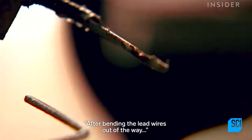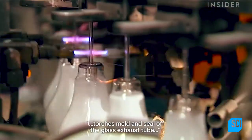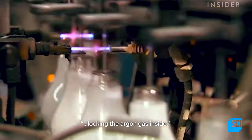After bending the lead wires out of the way, torches melt and seal off the glass exhaust tube, locking the argon gas inside.